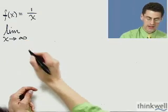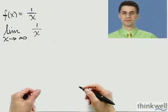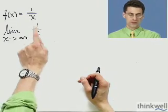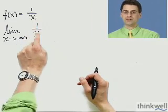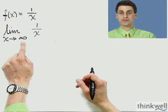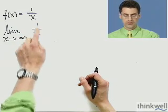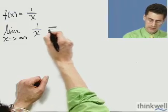As x goes off to infinity — that right horizon — what is the function doing? As x gets larger and larger without bound, what happens to 1/x? If x=10, we get 1/10. If x=100, we get 1/100. If x=1,000, we get 1/1,000, then 1/1,000,000, then 1/1,000,000,000. That quantity is approaching the number 0 — getting closer and closer to 0. So this limit equals 0.